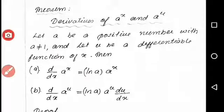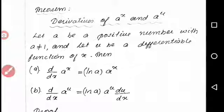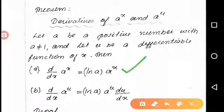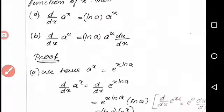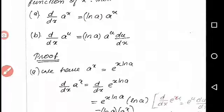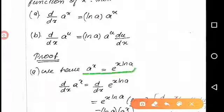Derivative of a raised to x and a raised to u. Let a be a positive number with a not equal to 1, and u be a differentiable function. We have two results: d by dx of a raised to x equals ln a into a raised to x, and d by dx of a raised to u equals ln a into a raised to u into du by dx. For the proof, we know that a raised to x equals e raised to x log a, by the definition of a raised to x.